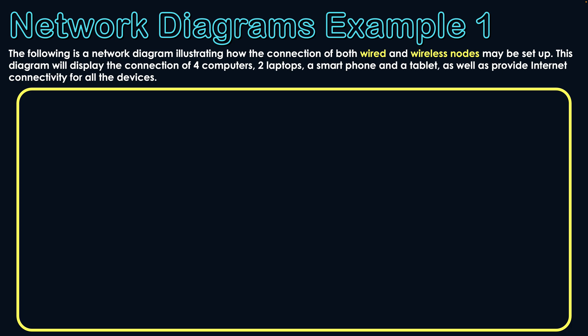This diagram will display the connection of four computers, two laptops, a smartphone, and a tablet, as well as provide internet connectivity for all of these devices. Let's get started — I'm going to begin with what will probably be right at the center of this network, which would be a router device.